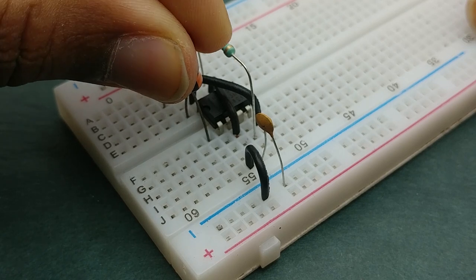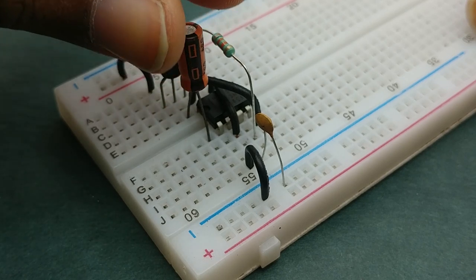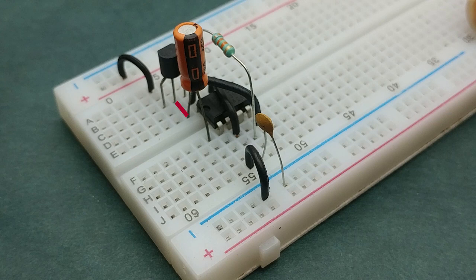Next place a 10 microfarad capacitor on the breadboard such that its positive terminal is connected to base of the transistor and its negative terminal is placed in an empty column.